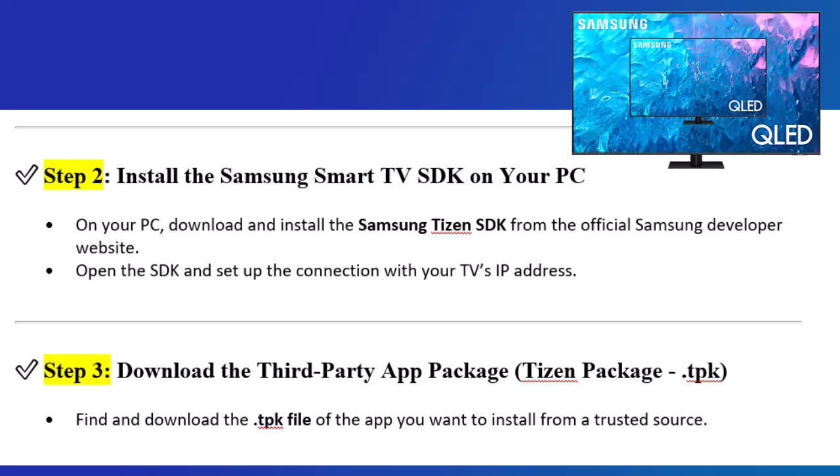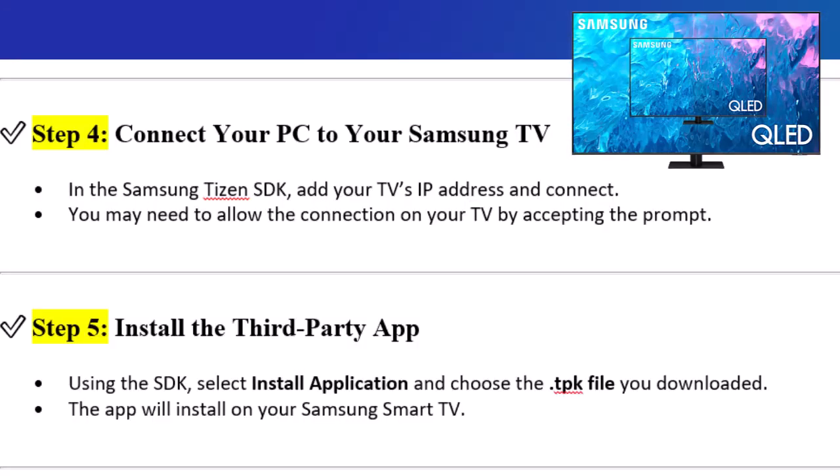Step 3: Download the third-party app package, the Tizen Package (.tpk). Find and download the .tpk file of the app you want to install from a trusted source.